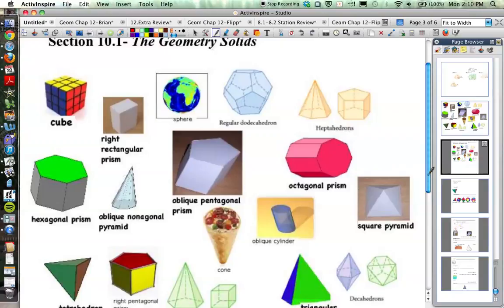And they do change names based a lot of times on their base shape, like if the base is a hexagon in a prism, it'll be a hexagonal prism. If it's perpendicular to the base, it'll be a right prism.